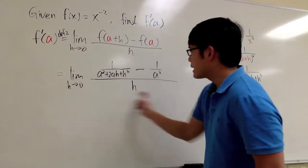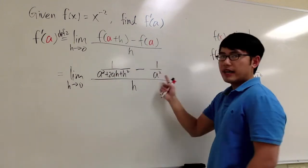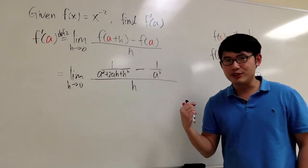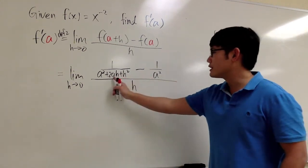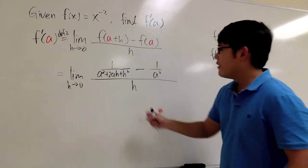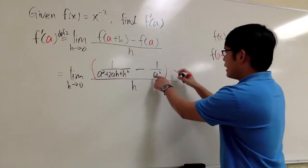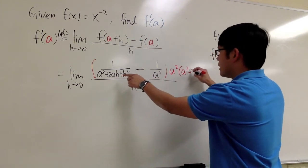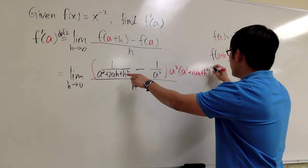As we can see, we have a complex fraction — there's a small fraction here, another one, and then a big one. To take care of this situation, we are going to multiply the top and bottom by the lowest common denominator of the small fractions — namely, a squared times the quantity a squared plus 2ah plus h squared.